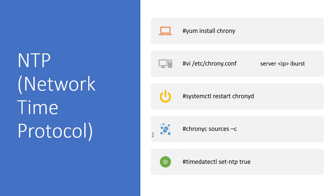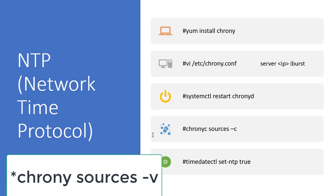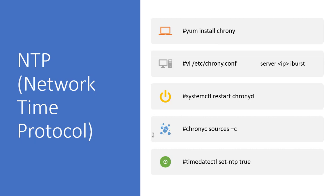After restarting the service, you need to perform two more steps. Check the operation using chronyc sources -v. The last command is timedatectl set-ntp, which enables or disables NTP synchronization for automatic time adjustment. If it is false, you need to run timedatectl set-ntp true. Now I am going to show you all this step by step.